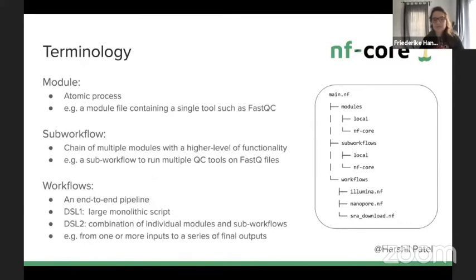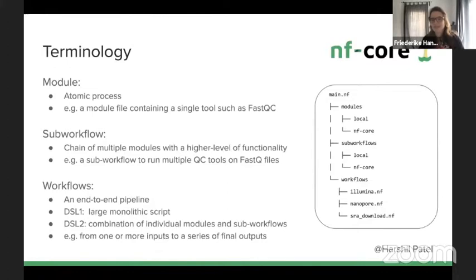The workflow takes one input and produces a final output. The current file structure of the viral recon pipeline illustrates this: modules have local and NF-core versions, subworkflows will have a similar structure since some are relevant to many pipelines such as QC, and then there are the workflows. In viral recon, Harshil separated workflows by input data type — Illumina and Nanopore — which are then called from the main NF.